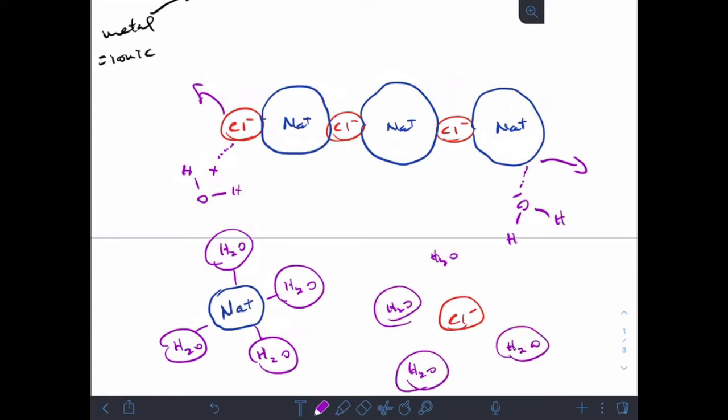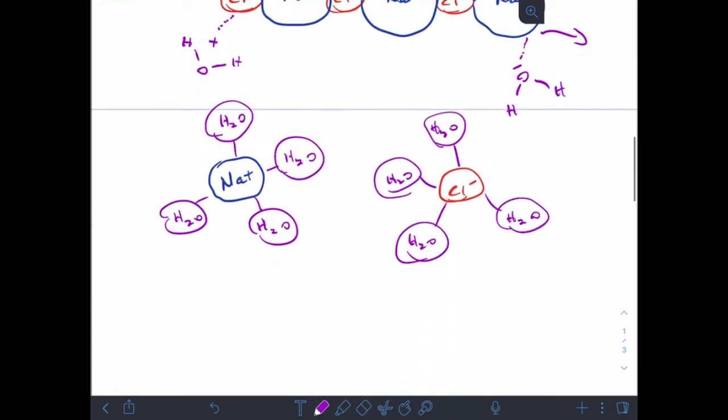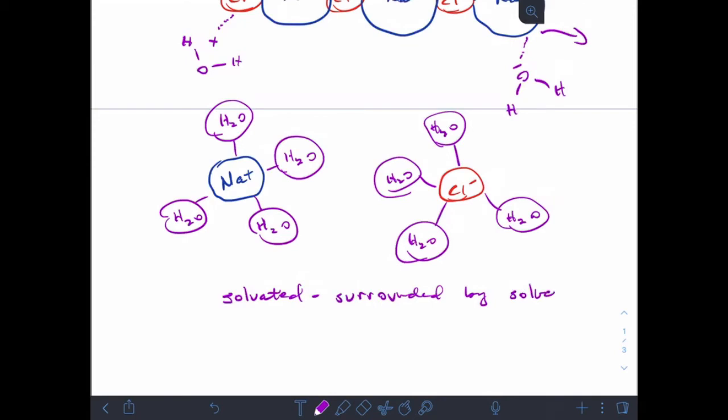Not necessarily four of them, but I'm just not going to draw a whole lot more than that. So we say that each of these ions is now solvated, and solvated means surrounded by solvent.